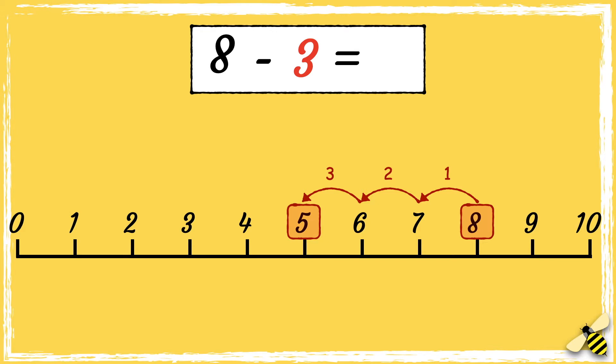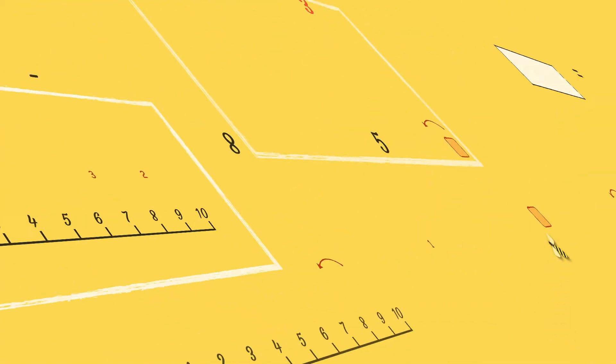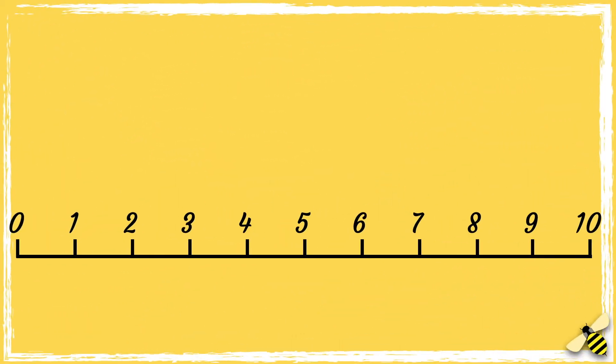5. So 8 take away 3 equals 5. Let's have a look at another example: 9 take away 4. We start from 9, and because we're taking away 4, we need to jump four digits backwards.